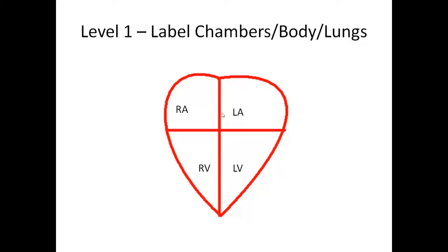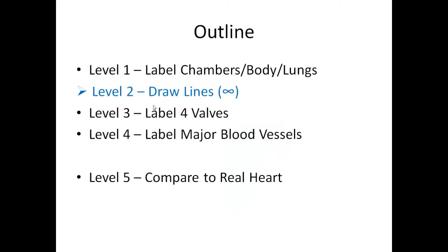Next, decide what side to put the lungs and the body on. The lungs go on one side and the body goes on the other side. Here's a way to remember: it would be nice if L for lungs was on the left side too, but it's not — the lungs are on the right side of your diagram. That's it for level one.